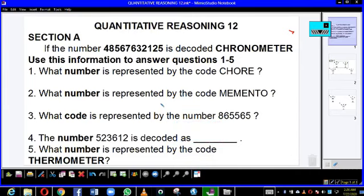Hello viewers, I greet you all and welcome you to today's quantitative reasoning lesson. Let's quickly look at Section A. If the number 48567632125 is decoded as chronometer, we're going to use this information to answer questions 1 through 5.